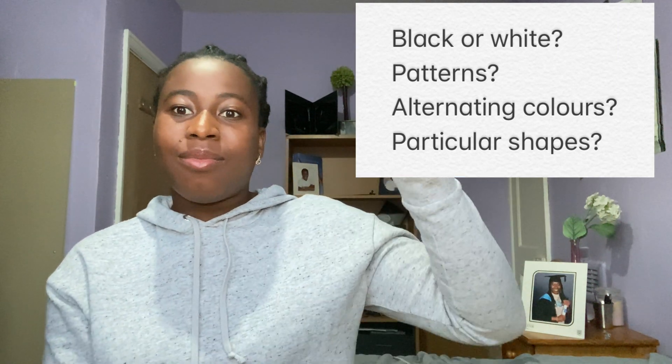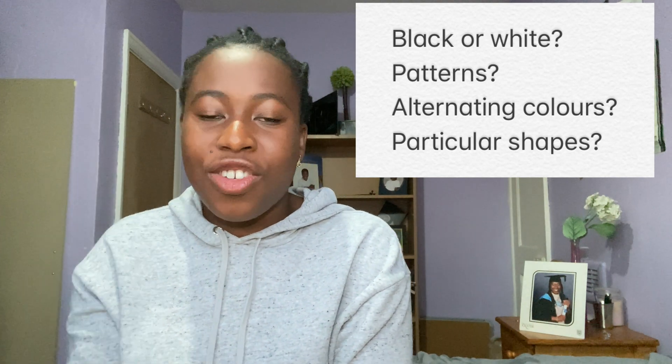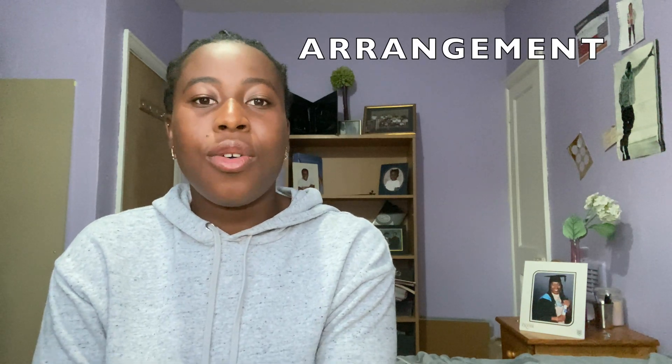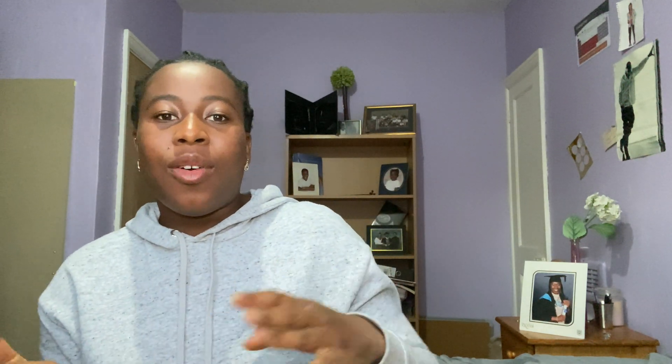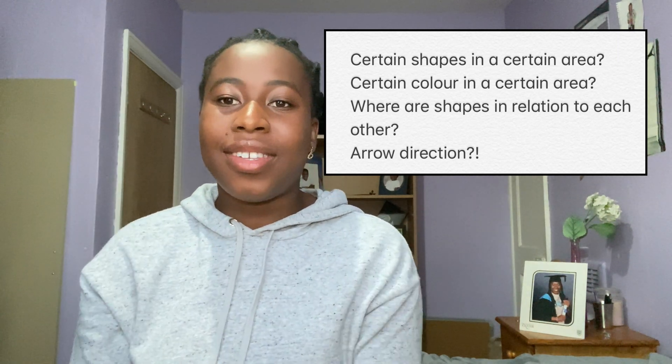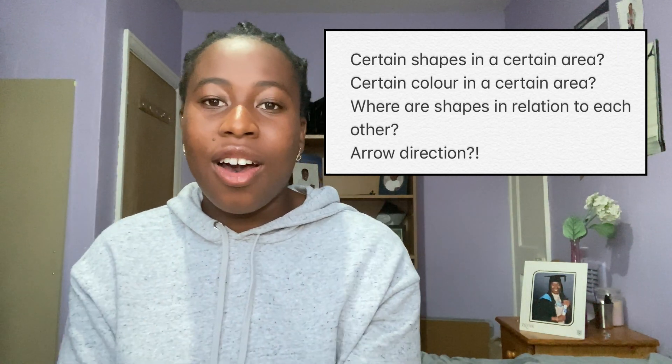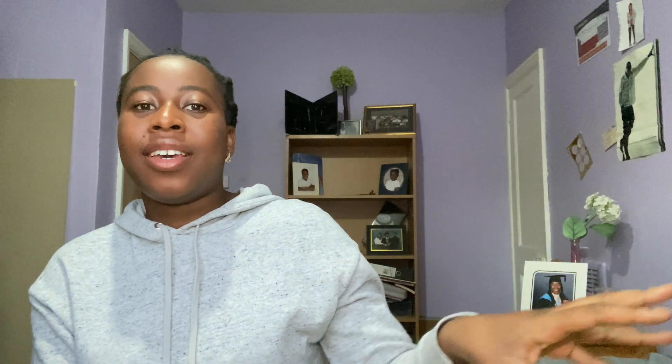C is for color. What color is the shape? Is the shape black or white? Does the shape have certain patterns in it? Are the colors alternating in a certain set? Where is a shape of a certain color? A is for arrangement — where are certain shapes in relation to each other in the box? Is something pointing upwards? Is an arrow pointing downwards or towards something? Are there certain colored shapes in a certain area of that box?